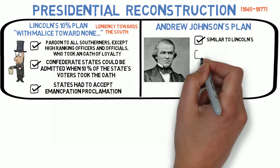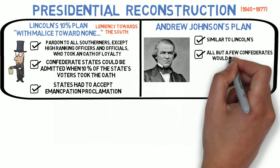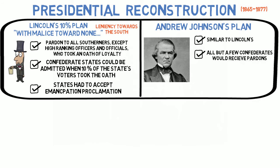Under Johnson's plan, all but a few high-ranking Confederates would be pardoned. Former Confederate states also had to ratify the 13th Amendment, which abolished slavery. While Johnson's plan was notably lenient towards the White South, it did nothing to protect the rights of former slaves, known as freedmen. Throughout the South, former Confederates were elected to state governments, who then proceeded to return the South to the racial status quo — relegating freedmen to a state of racial, political, and economic inferiority.